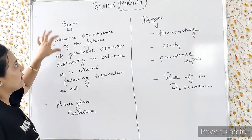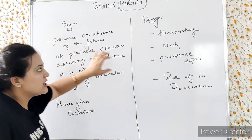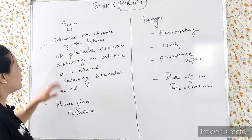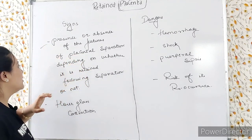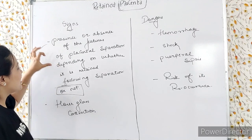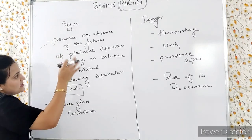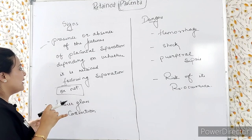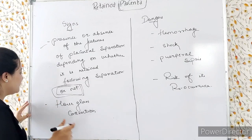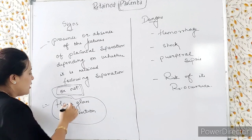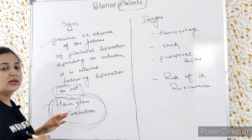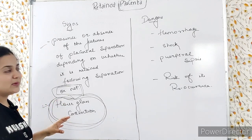Now we will look at signs that tell us placenta is still retained, and the dangers. The presence or absence of features of placental separation depends on whether it is retained following separation or not. In hourglass contraction, the placenta cannot be completely expelled or separated.